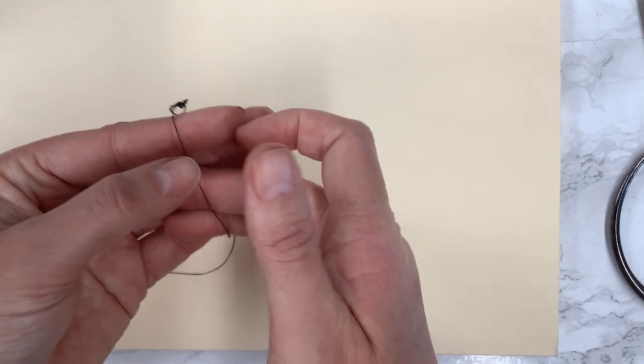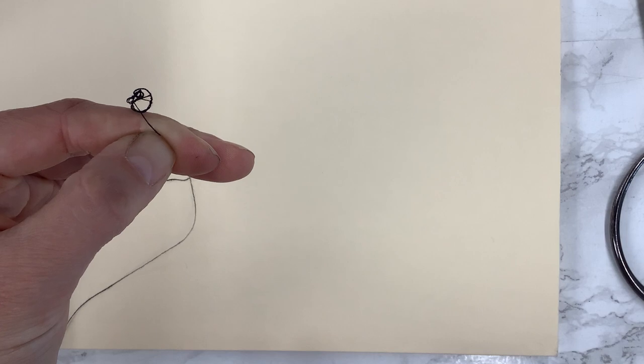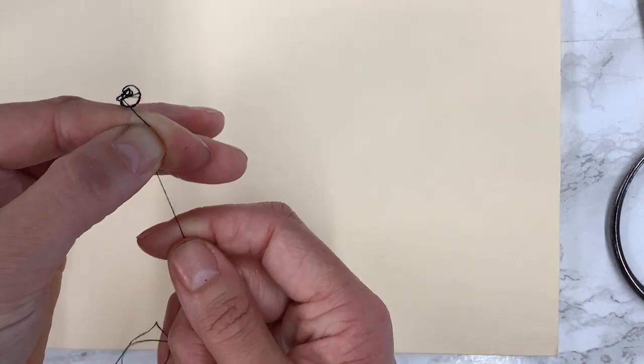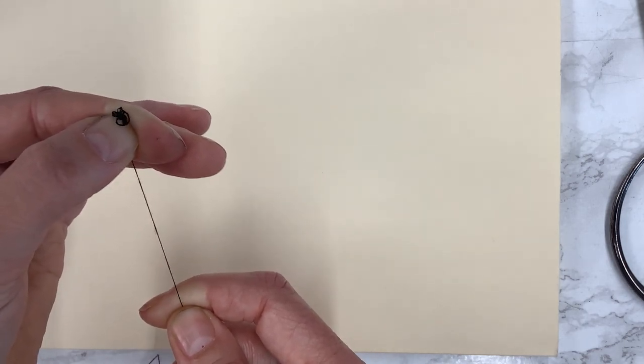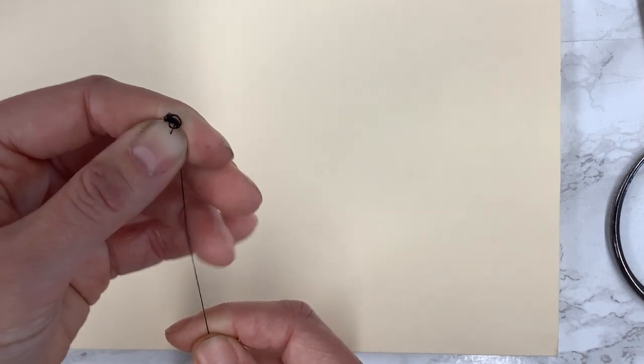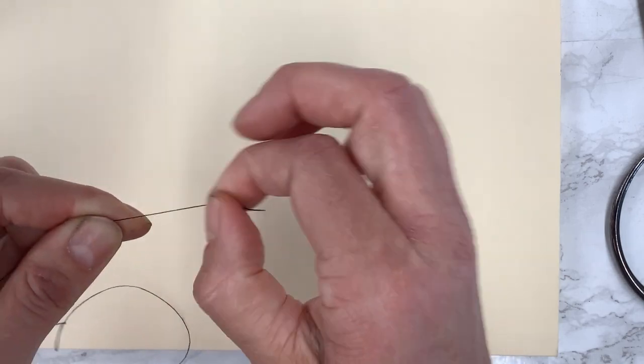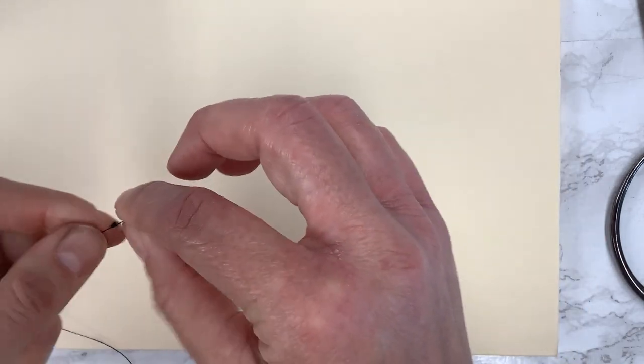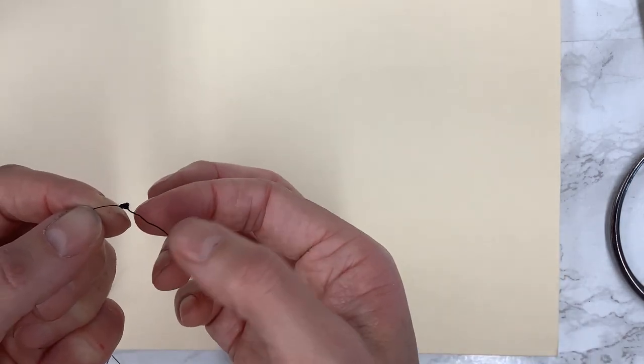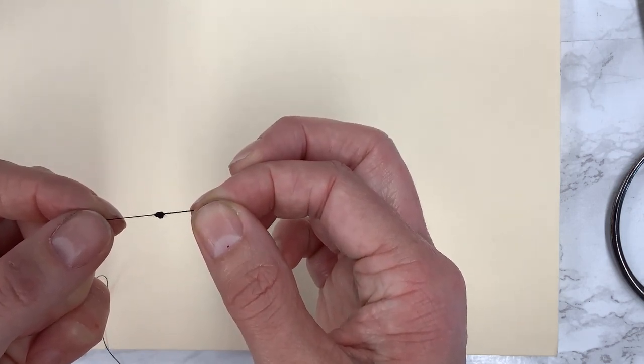So then I take my thread and I pinch really hard. So notice how my finger is actually kind of turning white there. I pinch really hard. I take my other hand and I pull the long end. And you pull, pull, pull, pull, pull. It's going to start to get stuck a little bit. Keep going until it's totally stuck. Mine's totally stuck right now so I can let go and I can kind of like test it. So it did end up pulling out a little bit, but there's still a big ugly knot there which is what you want. A big ugly knot.